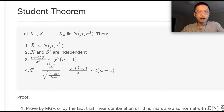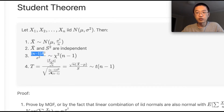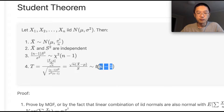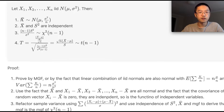Fourth, if you take (sample mean − μ) divided by the standard deviation, the numerator is a standard normal random variable and the denominator is the square root of chi-square(n−1) divided by its degrees of freedom (n−1). By the definition of the Student's t-distribution, we can show this ratio has a t-distribution with n−1 degrees of freedom.